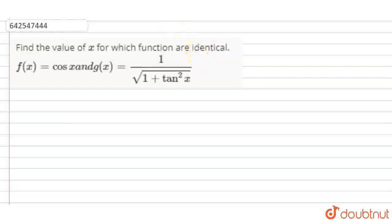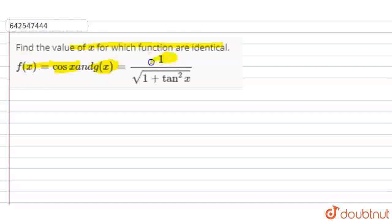Today, our question is to find the value of x for which functions are identical. The first one is f(x) = cos x and g(x) = 1 upon root under 1 plus tan squared x.